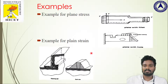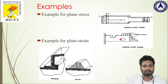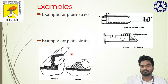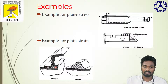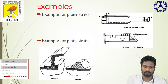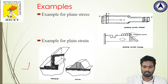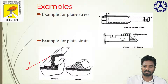For examples of plane stress — as mentioned, thin plates, plates with holes, and paper-like plates can be treated as plane stress problems. Whereas for plane strain, retaining walls and dams are typical examples. In a retaining wall, the x and y direction lengths are minimum whereas the z direction length is infinite or very long. Similarly, for dam structures, the x and y directions are smaller whereas the z direction runs for a mile.